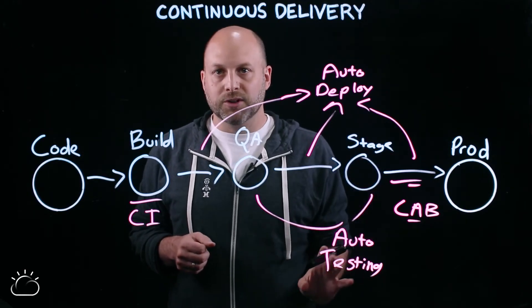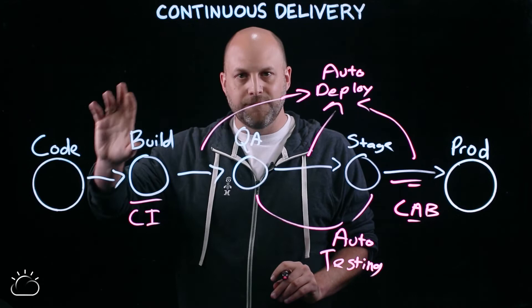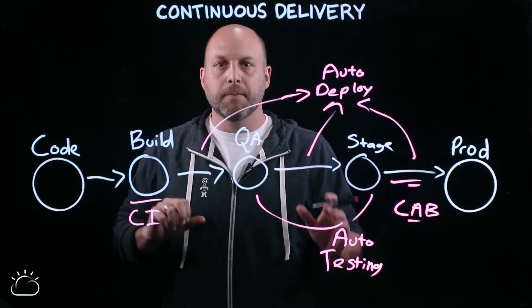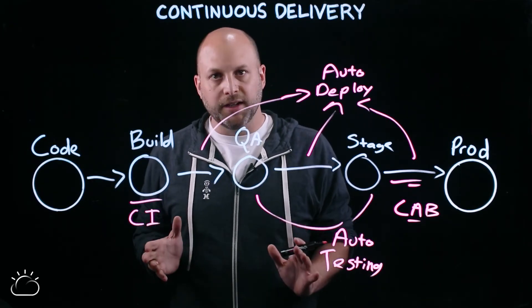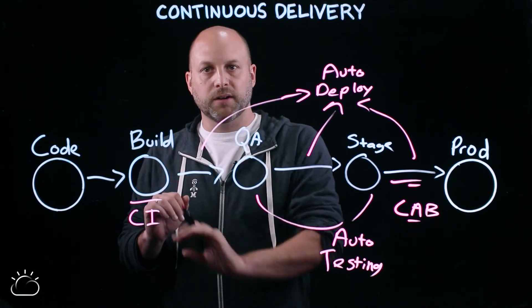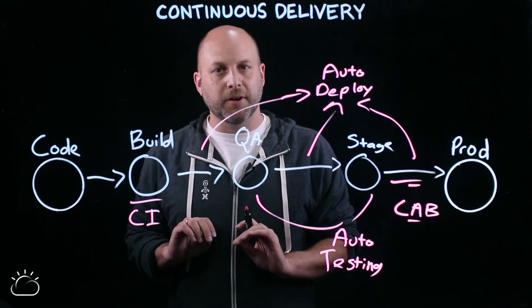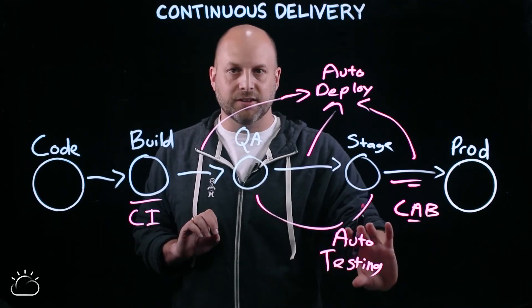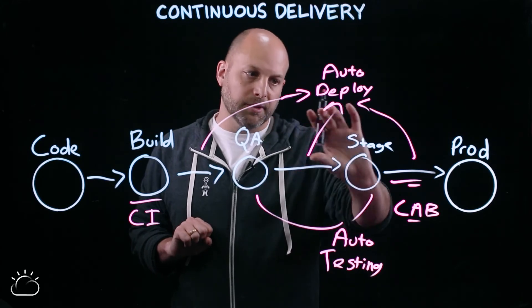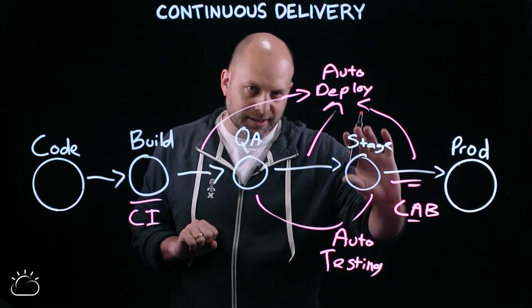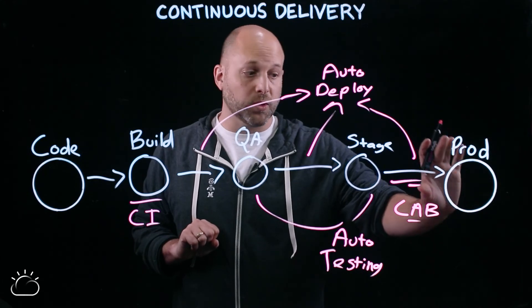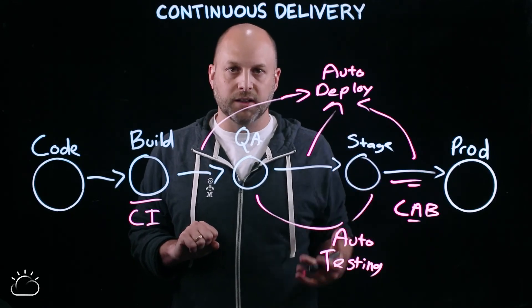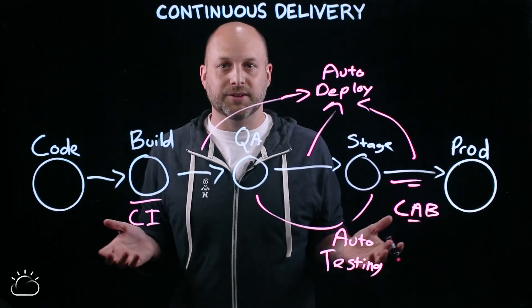That's the basic idea of continuous delivery. You have something valuable in code, you want that in production, but you don't want to break things. So: take your code, make it software in a build process. Now we want to make sure we're not breaking things, so we're going to test our deployment process moving into QA, then test the software with automated testing. We're going to use the same deployment process to stage, the same deployment process out to production after doing more tests, more checks, getting approvals. That allows us to get those changes into production quickly and safely. And that's continuous delivery. Thank you.